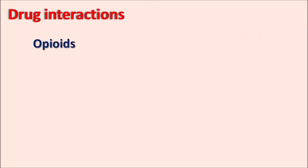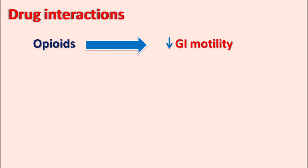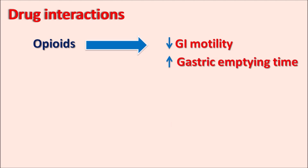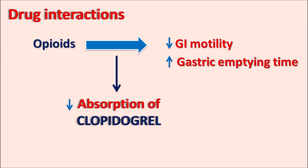Opioids can act on GI motility, reducing gastrointestinal motility and causing constipation. Because of this decreased motility, they increase gastric emptying time, resulting in delayed and decreased absorption of clopidogrel. So absorption of clopidogrel may be reduced by co-administration of opioids.